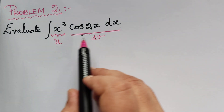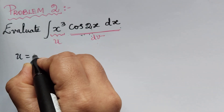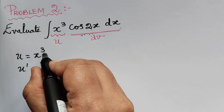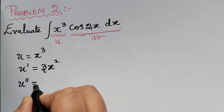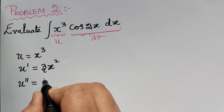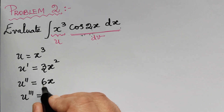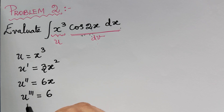We have decided u and dv. So u is equal to x to the power 3. Now we have to find u dash, which is the differentiation of x cube with respect to x, giving us 3x square. Next, u double dash is the differentiation of 3x square, which gives 6x. Next, u triple dash is the differentiation of 6x, which is 6. Since we get a constant, we stop the differentiation here, because differentiating a constant gives 0.